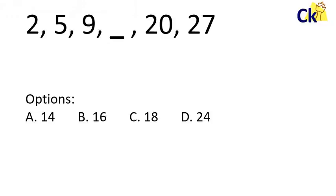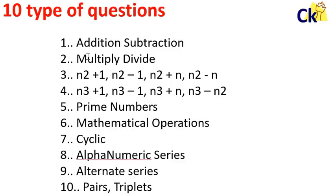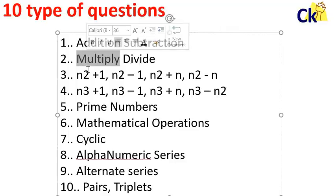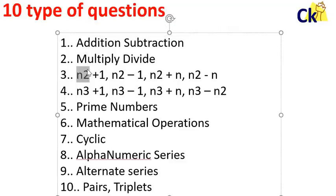Same way double, triple, 5 becomes 8, 8 becomes 64. So it is multiply divide. Third and fourth are the most common type. 1, 2, 3, 4, 5, 6, 7, 8 - square plus 1, square minus 1, all these things.